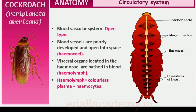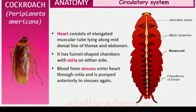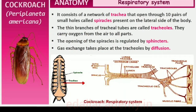The blood vascular system of cockroach is an open type. Blood vessels are poorly developed and open into spaces called haemocoel. Visceral organs located in the haemocoel are bathed in blood called hemolymph, which is composed of colorless plasma and hemocytes. The heart of cockroach consists of an elongated muscular tube lying along the middorsal line of the thorax and abdomen, differentiated into funnel-shaped chambers with ostia on either side. Blood from sinuses enters the heart through ostia and is pumped anteriorly to the sinuses again. The respiratory system consists of a network of trachea that open through 10 pairs of small holes called spiracles present on the lateral side of the body. Thin branching tracheal tubes subdivided into tracheoles carry oxygen from the air to all parts. The opening of the spiracles is regulated by sphincters, and exchange of gases takes place at the tracheoles by diffusion.